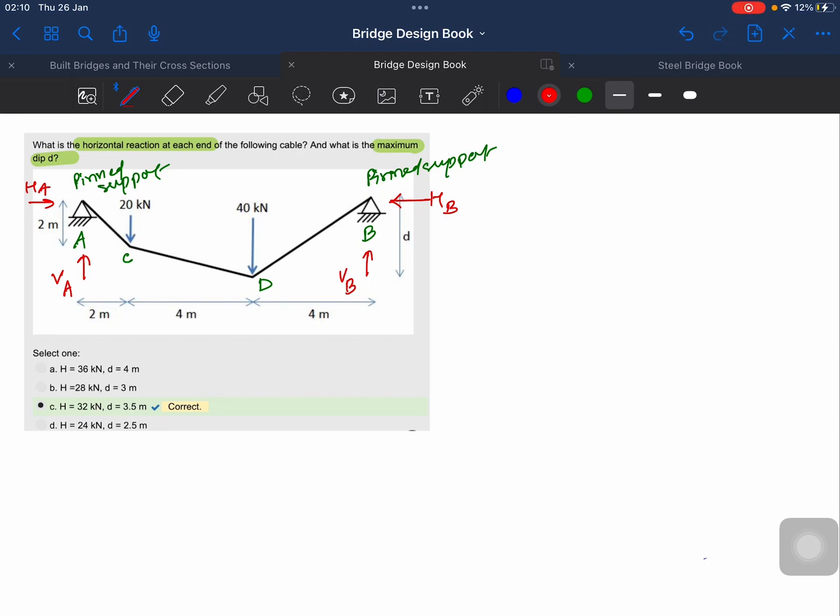One thing is that sum of vertical forces is zero and horizontal forces will also be zero. Taking moment about A equals zero: 20 into 2 which is clockwise, 40 into 6 which is also clockwise, and VB into 10 - this would be in the anti-clockwise direction. This will be zero, so VB comes out to be 4 plus 24, that's 28 kilonewtons.